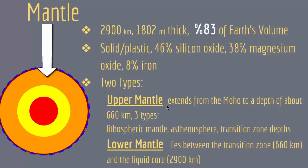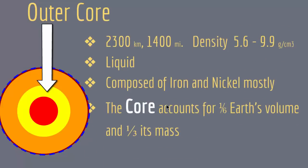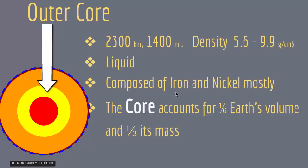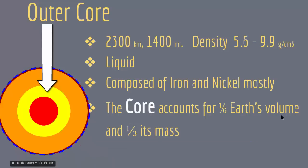After the mantle comes the outer core, about 2300 kilometers thick, with a density of about 5.6 to 9.9 grams per centimeter cubed. The material in the outer core is in a liquid state. So far we have had the crust as solid, the mantle in a plastic state, and now the outer core as liquid. The outer core is composed mostly of iron and nickel. The core as a whole accounts for one-sixth of Earth's volume and one-third of its mass, due to the high density of iron and nickel.